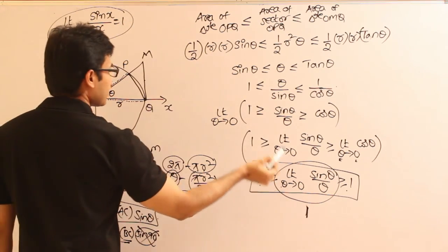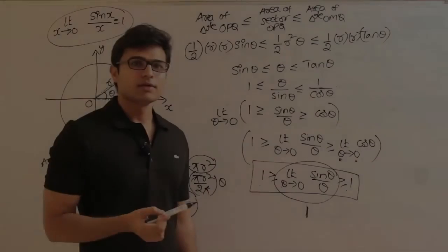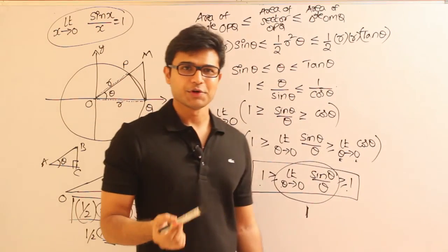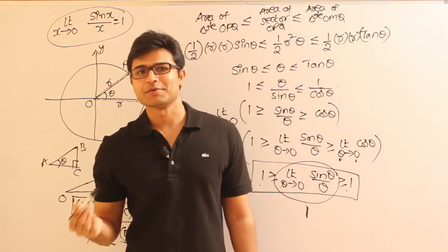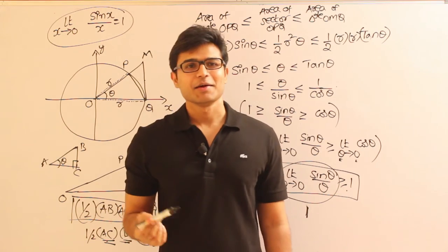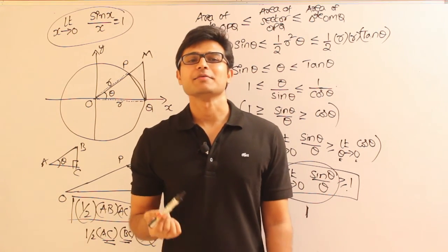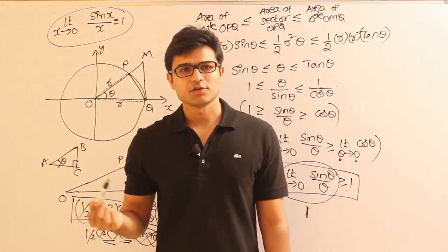Just replacing theta with x, we have proven that limit x tends to 0 of sin x by x equals 1. If you understood the proof, great. If not, just remember the result — but the proof is very beautiful and might be useful in some exams. We shall see examples of how to apply this result.